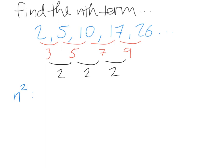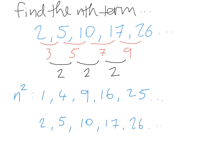So we're going to write out the actual n squared sequence, which is just the typical square number sequence. 1 squared is 1, so our first term is 1. 2 squared is 4, so our second term is 4. Then 9, 16, 25, and so on. Now we're going to write out our sequence — 2, 5, 10, 17, 26 — directly underneath the n squared sequence, and compare each term.